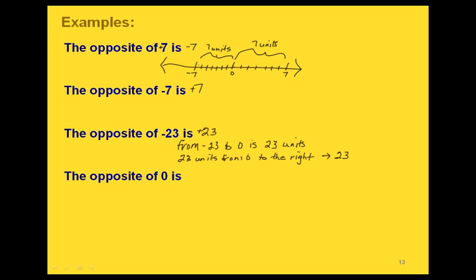The one exception is the opposite of 0. Since 0 is neither negative nor positive, and 0 is 0 units from 0, the opposite of 0 is just 0.